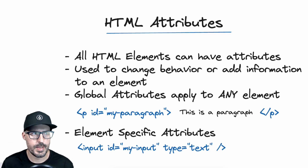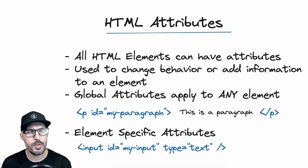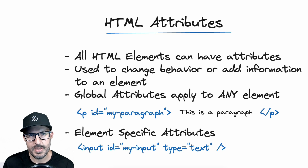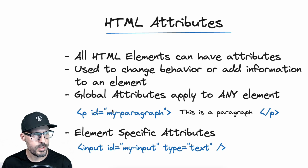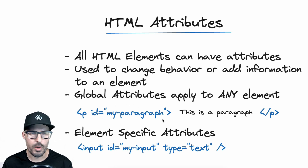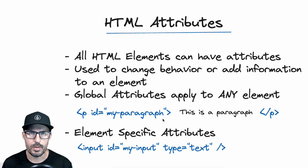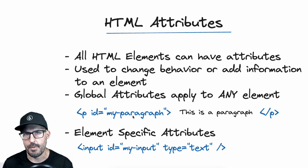Now let's talk about attributes. All HTML elements can have attributes, and attributes are used to change the behavior or add information to an element. The types of attributes you can use depend on the element, but there is a set called global attributes that can apply to any element. Looking at a paragraph example, we can see an ID attribute set to 'my paragraph'. An attribute always takes the form of attribute name equals some value, and the value is always wrapped in quotes.